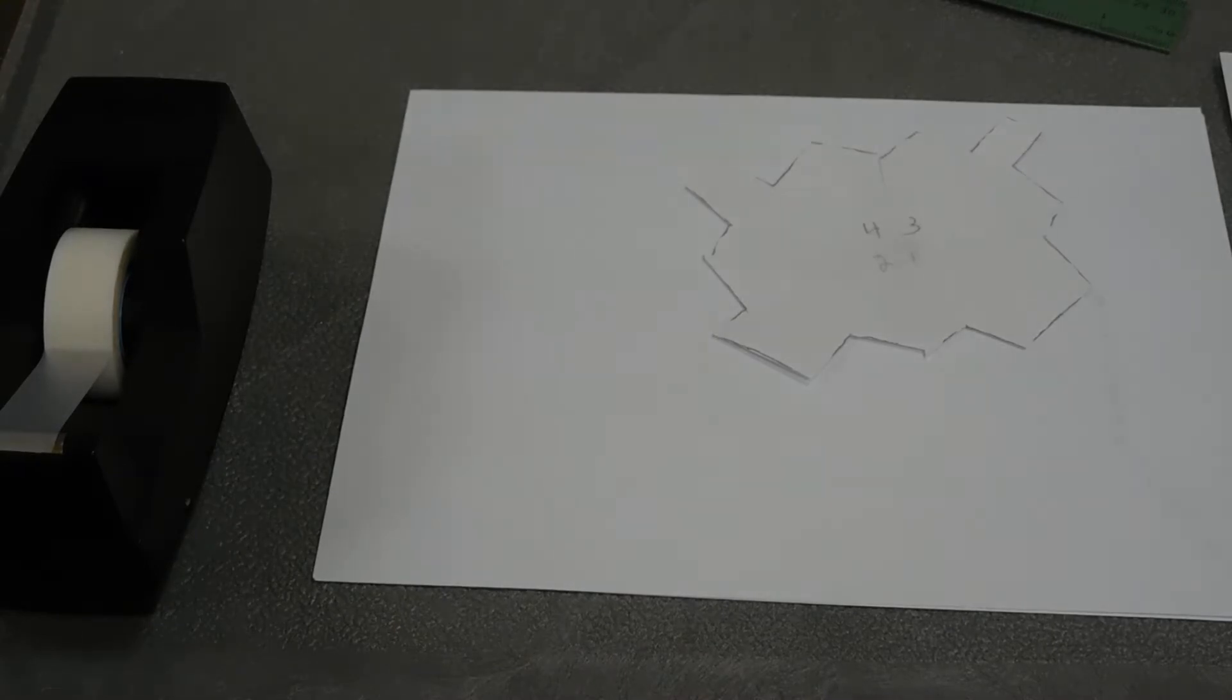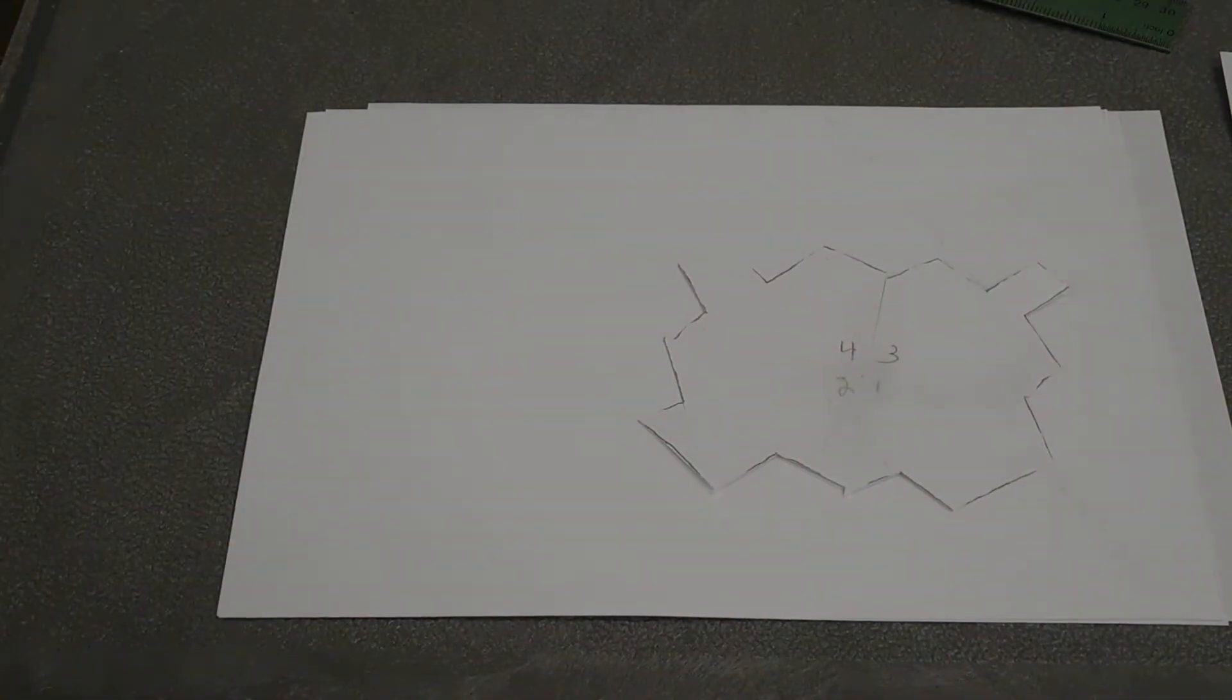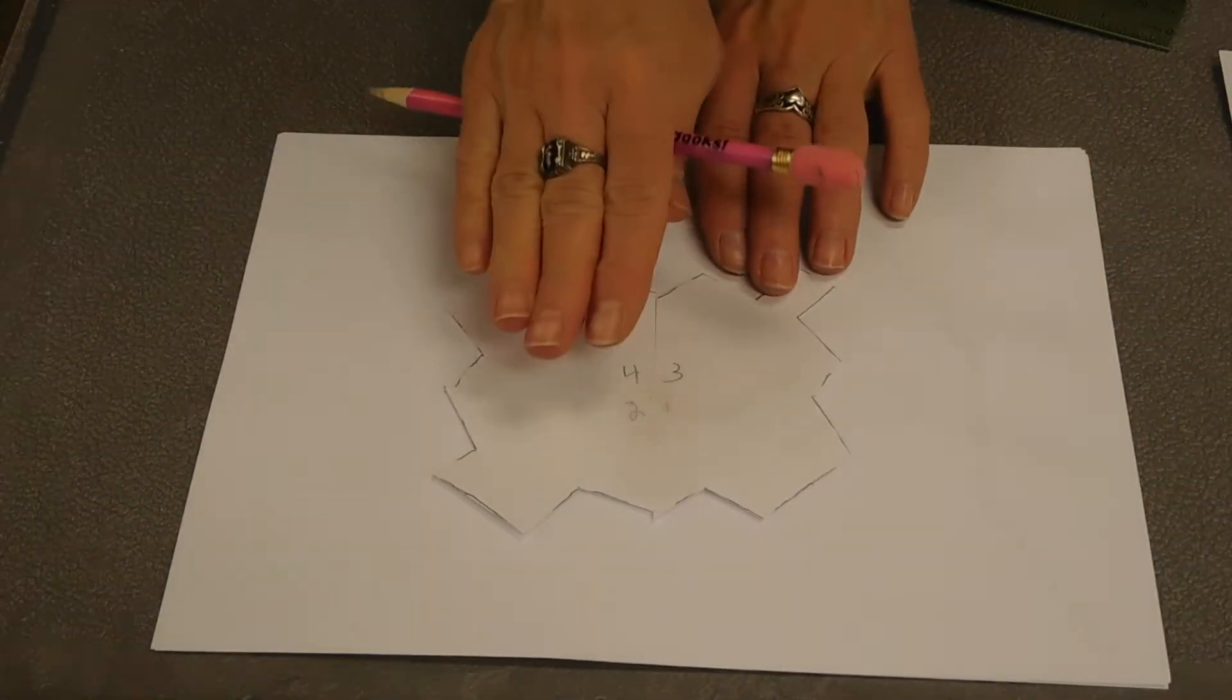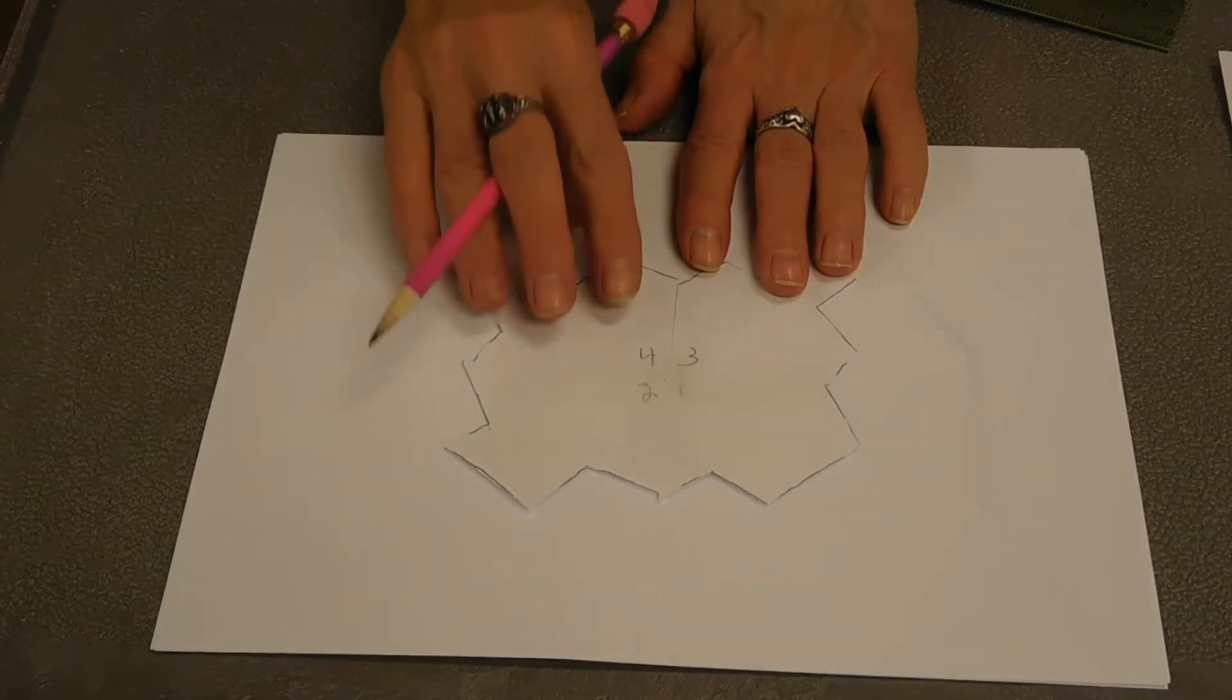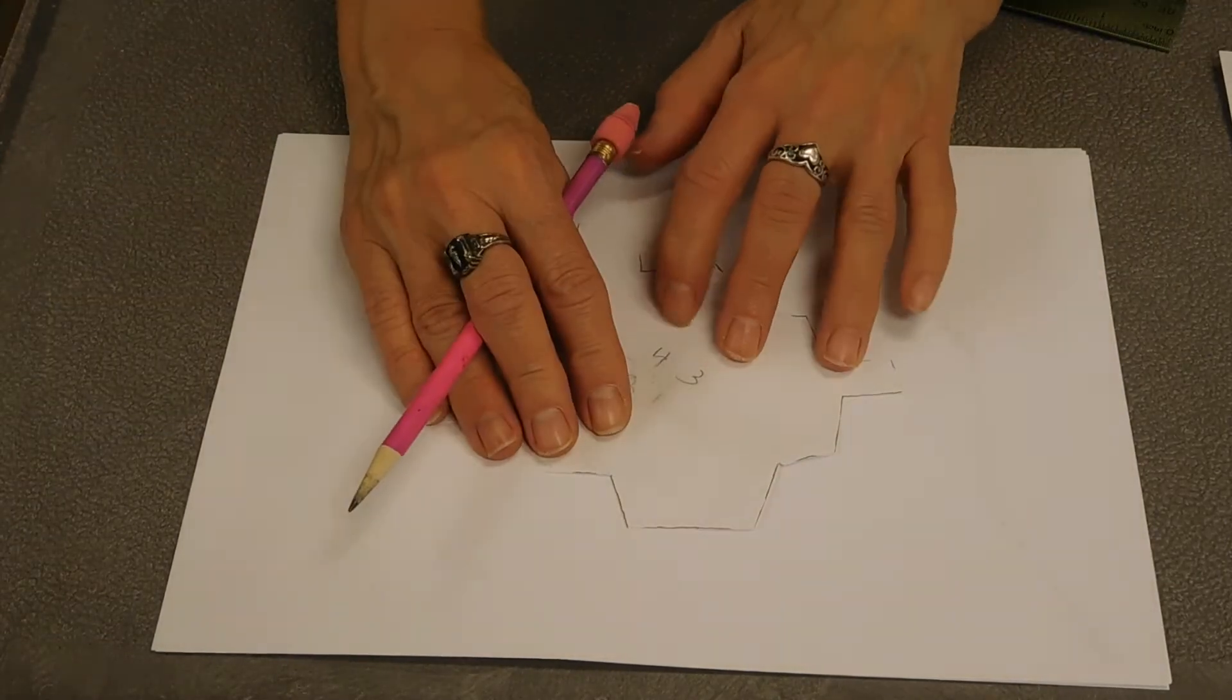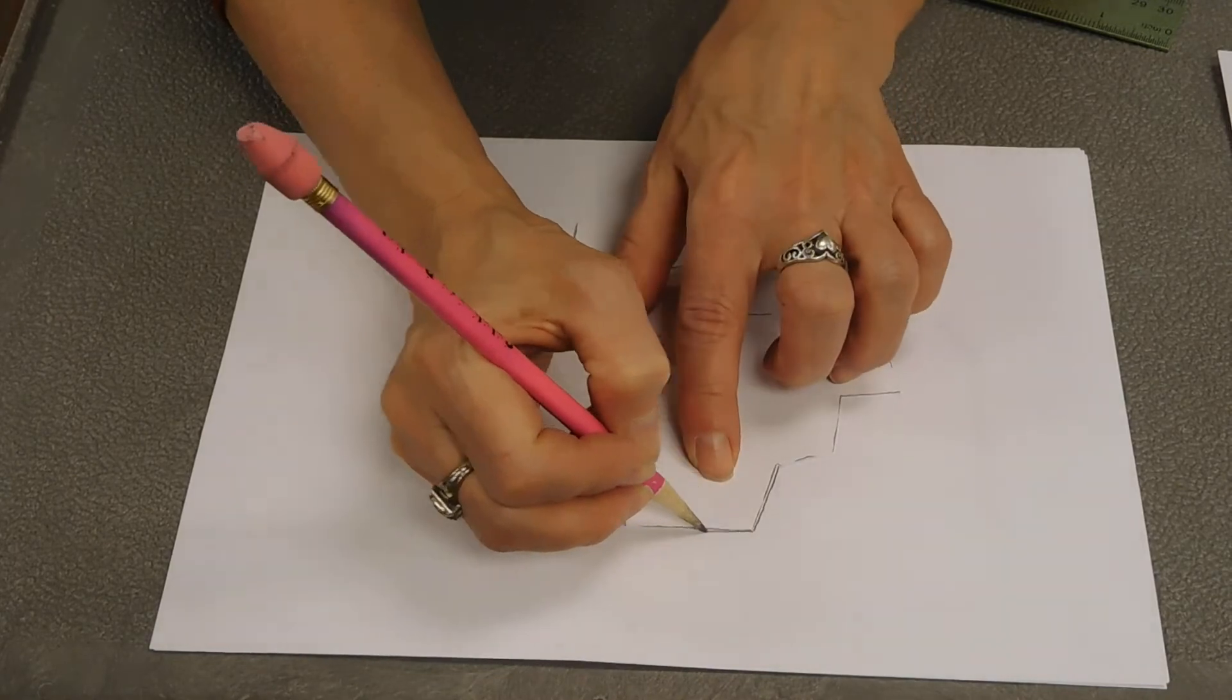So we are just going to take our shape and generally I start in the middle of the page. You can do your tessellation by starting on an edge. You can start in the middle. You can turn it a little at an angle. I think that's what I'm going to do. So I'm just going to draw, trace around the outside of my shape.